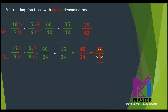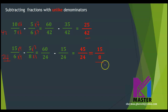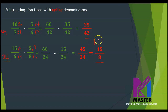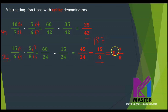Can I write it as a mixed number? Yes, because this is an improper fraction. 15 divided by 8 — how many 8s are there in 15? Only 1, with remainder 7. So the mixed number will be 1 and 7 over 8.